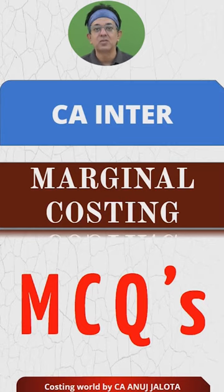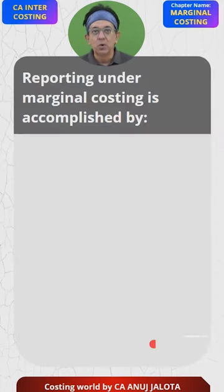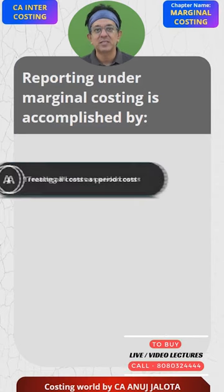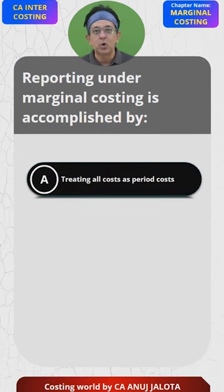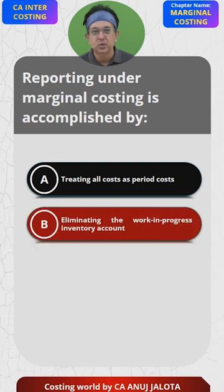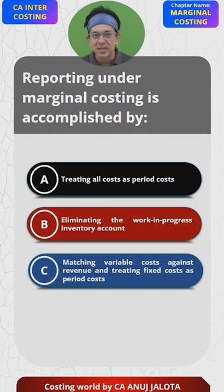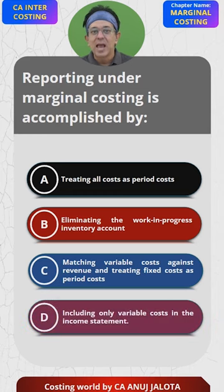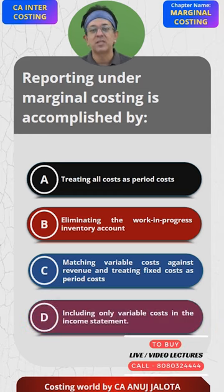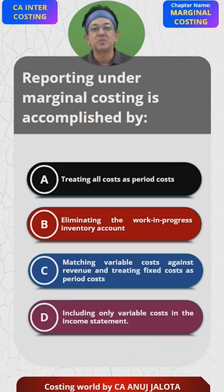CA Inter Marginal Costing MCQs. Reporting under marginal costing is accomplished by: A. Treating all the costs as period cost. B. Eliminating the WIP inventory account. C. Matching variable cost against the revenue and treating fixed cost as a period cost. D. Including only variable cost in the income statement. Think of the correct answer.